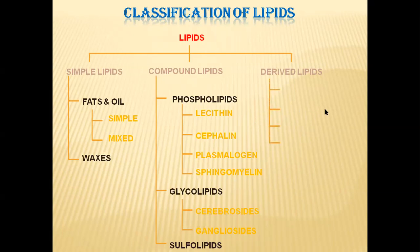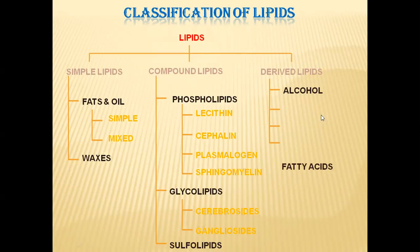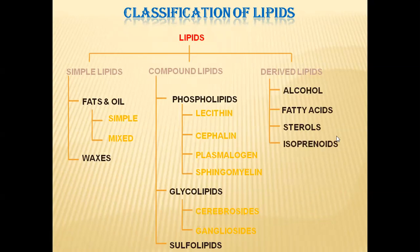Coming to the third category of lipids, derived lipids. These lipids are formed from the digestion or processing of lipids, hence they are called derived lipids. In derived lipids, we have four categories: one is alcohols, second one is fatty acids, third one is sterols, and fourth one is isoprenoids. All these four categories are derived from lipids.